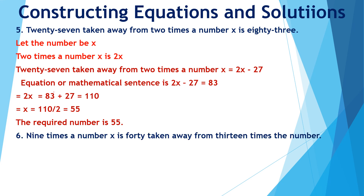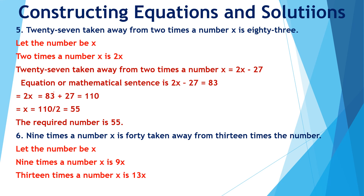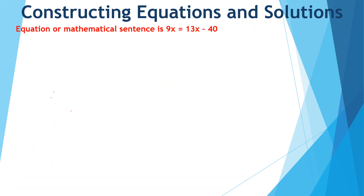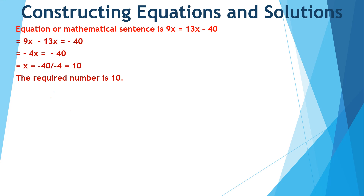9 times the number x is 40 taken away from 13 times the number. Let the number be x. 9 times the number x is 9x, and 13 times the number x is 13x. 40 taken away from 13x will be 13x minus 40. So equating, the mathematical sentence is 9x is equal to 13x minus 40. On solving, we get minus 4x equal to minus 40, or x equal to 10. So the required number is 10.